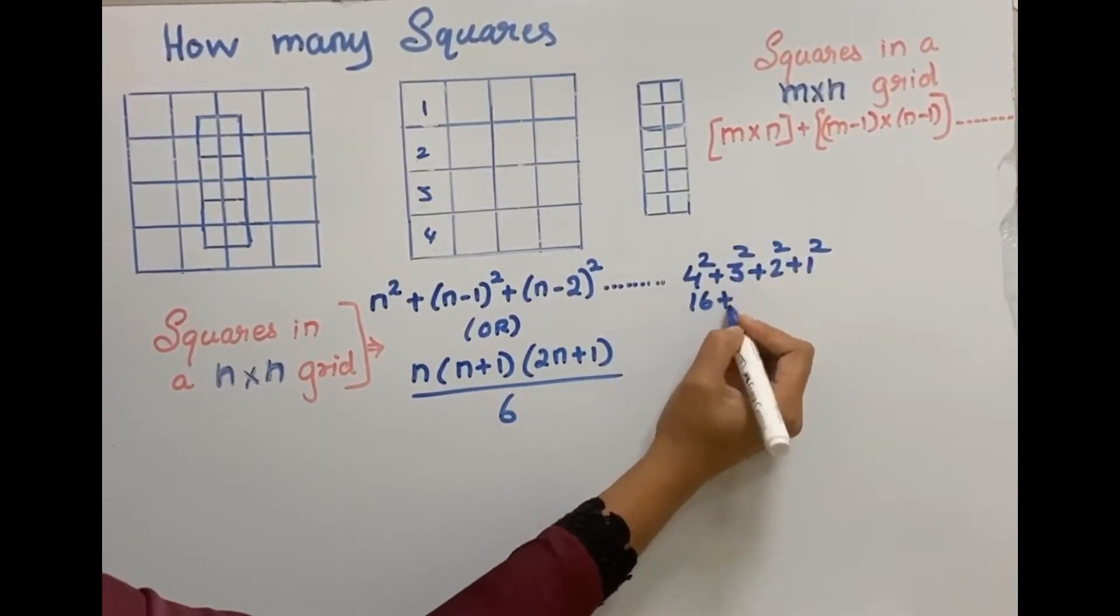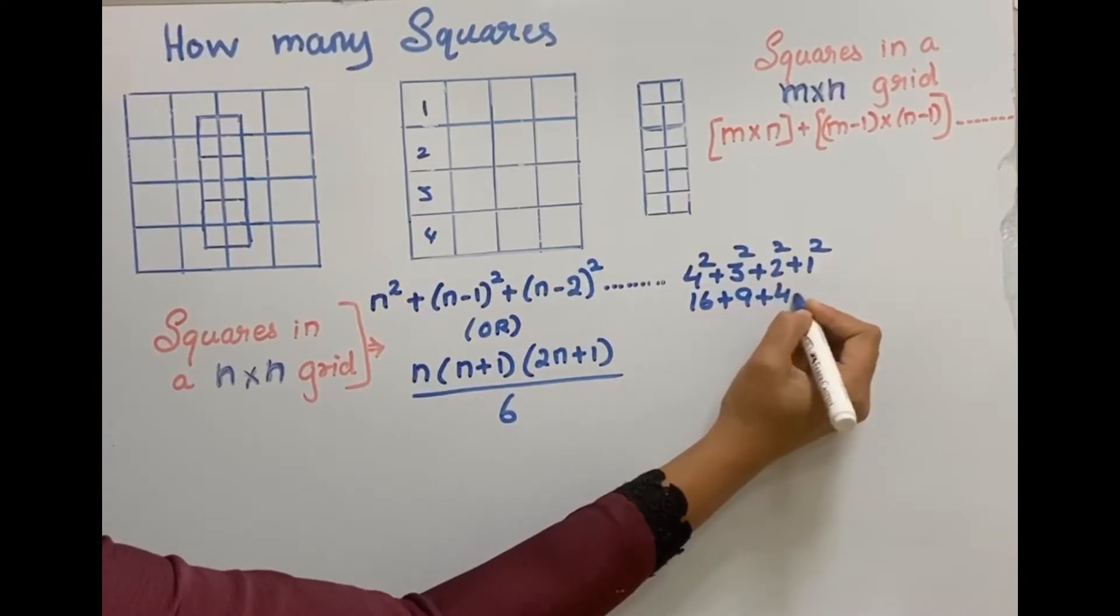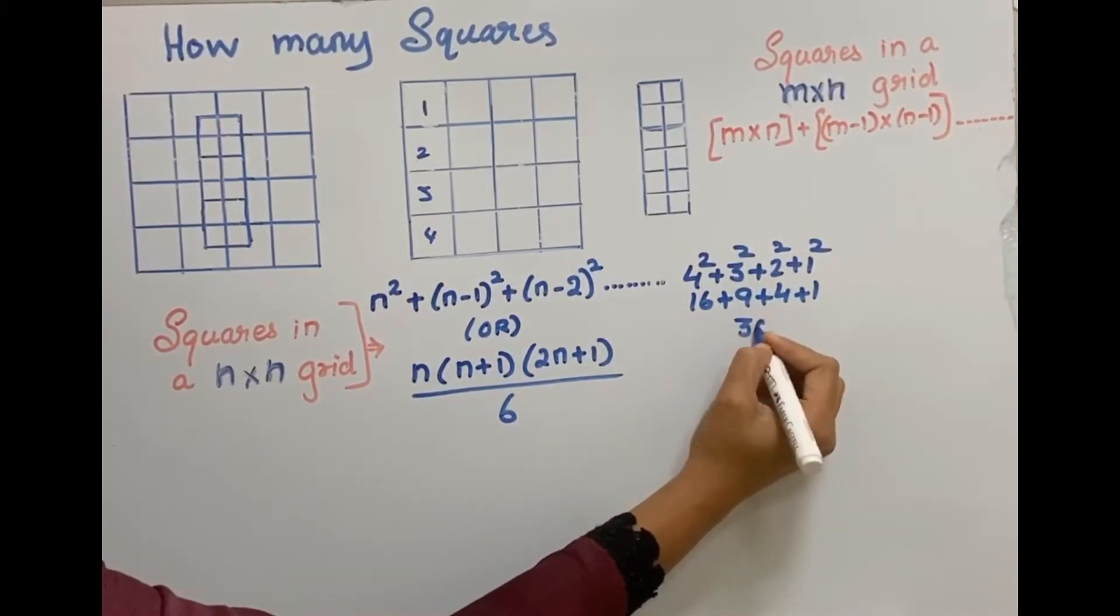Now square it, 4 square is 16, then 3 square, 2 square, 1 square. So the summation is 30.